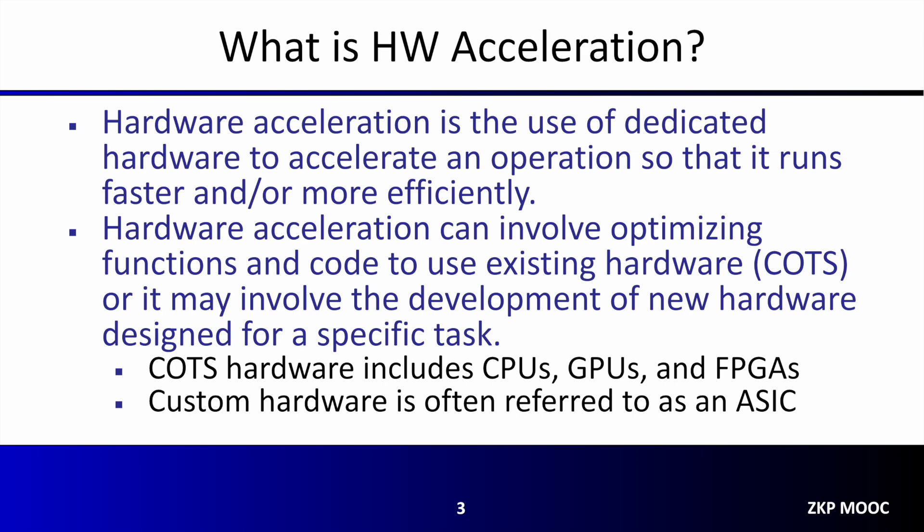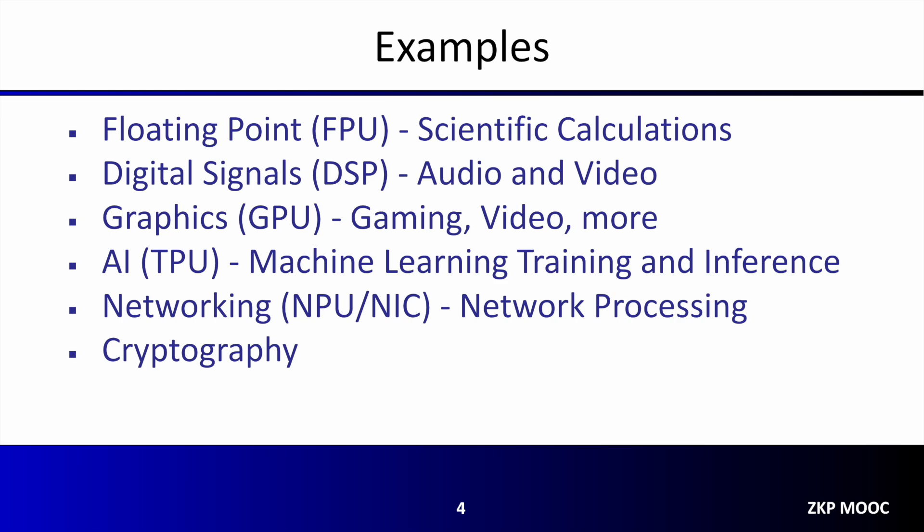The use of custom hardware to accelerate computationally expensive tasks has a well-established history. Prior to the advent of modern processors, many of the original computing systems had a separate coprocessor for performing floating-point operations. Some more modern coprocessors or hardware acceleration units you may be familiar with include DSPs for processing audio and video, GPUs for gaming and video transcoding, TPUs for machine learning training and inference, and NICs or NPUs for network and packet processing.